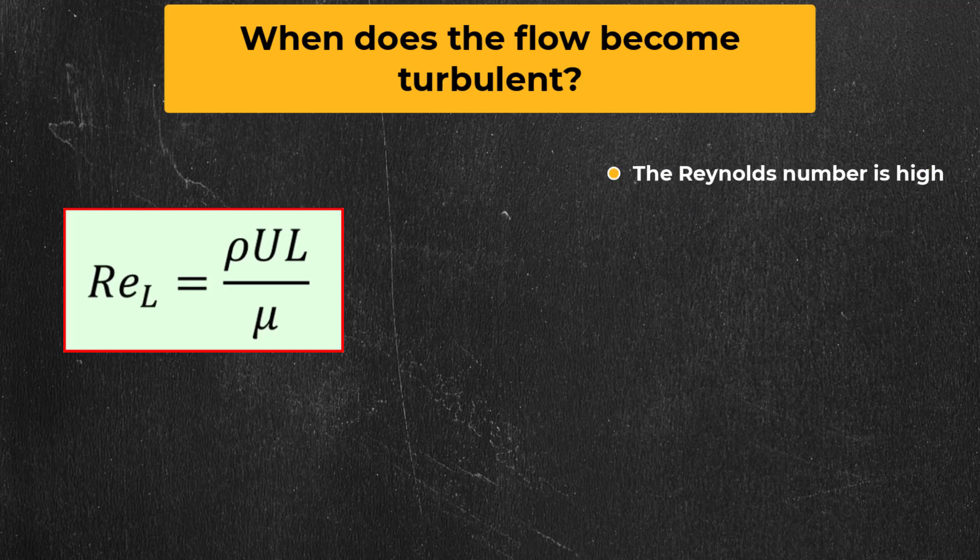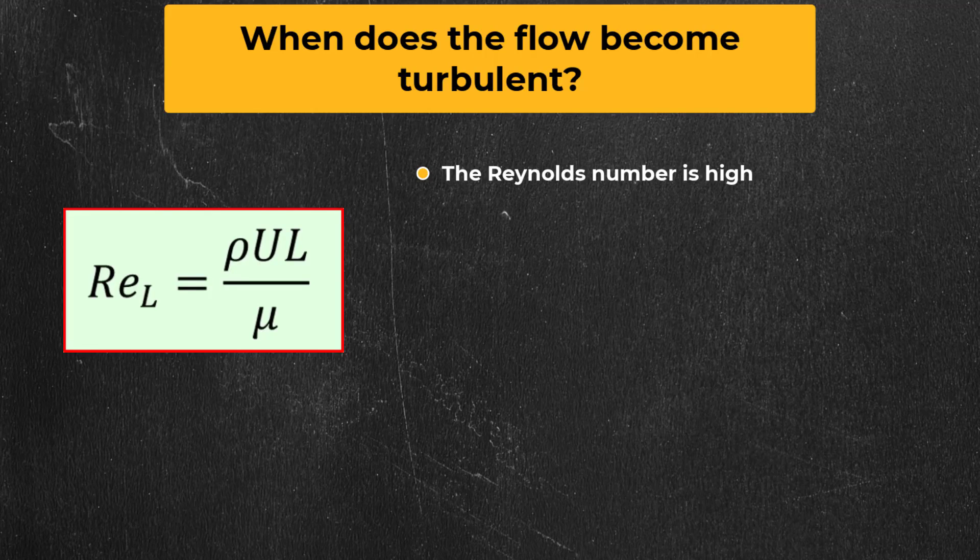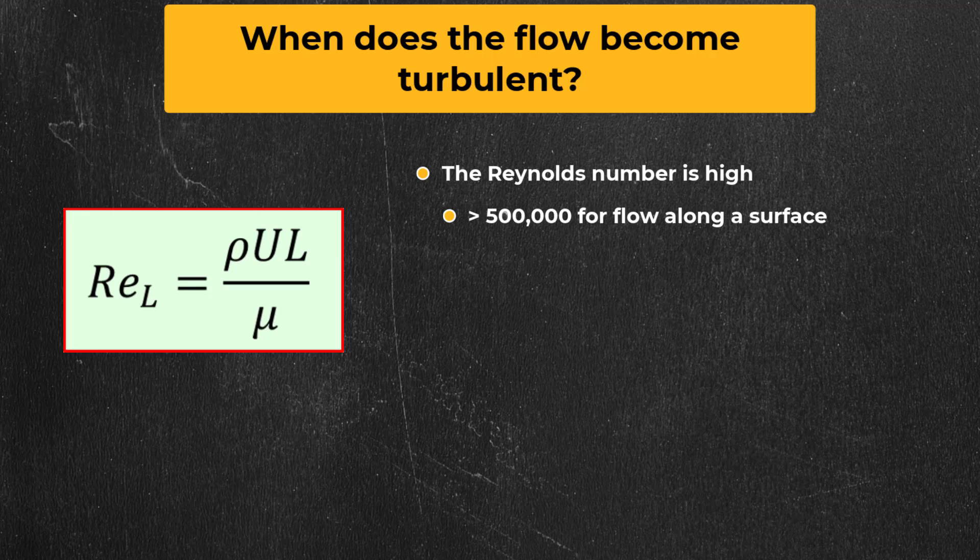In general, a flow becomes turbulent when the Reynolds number is high, but the exact value is different in different applications. So for flow along a surface, the flow is turbulent when the Reynolds number based on the distance from the leading edge is higher than 500,000. For flow in a pipe, if the Reynolds number is above 4000, then the flow is considered to be turbulent.